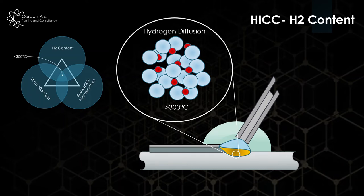When the material solidifies, if it's still above 300 degrees Celsius, that hydrogen is able to diffuse and leave our base material. If that happens, we end up with a really low hydrogen content and we've removed that top section of our triangle, so we're unlikely to get hydrogen cracking.